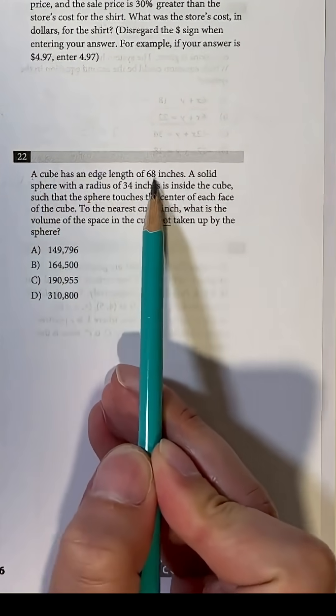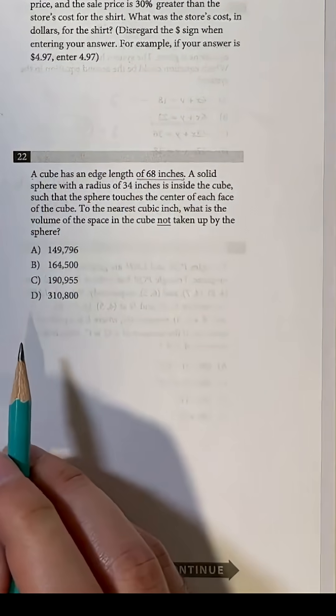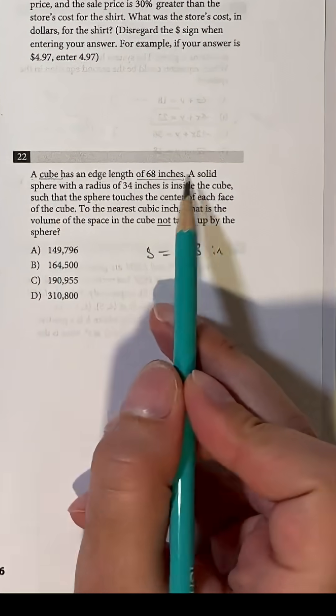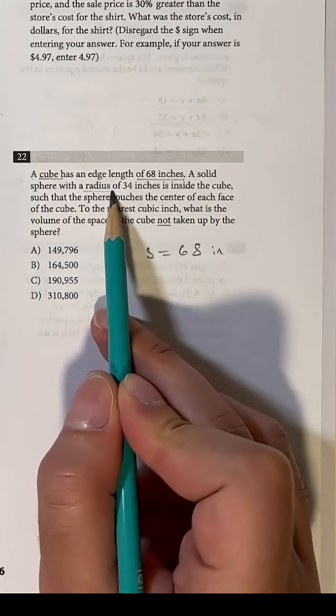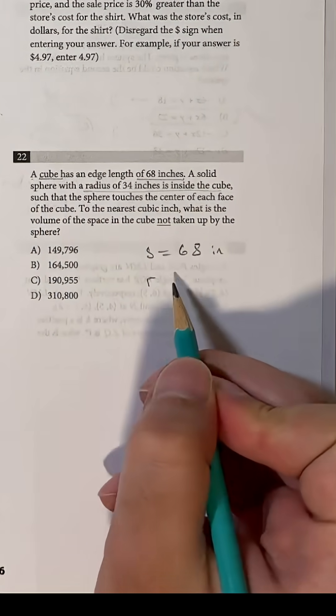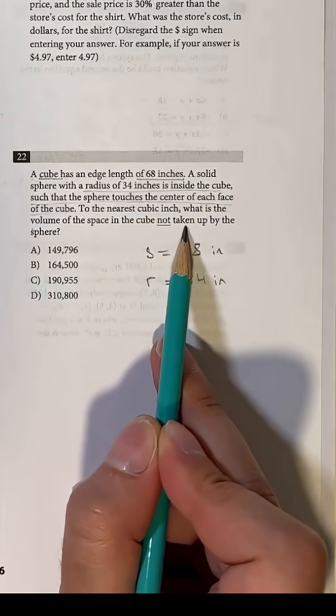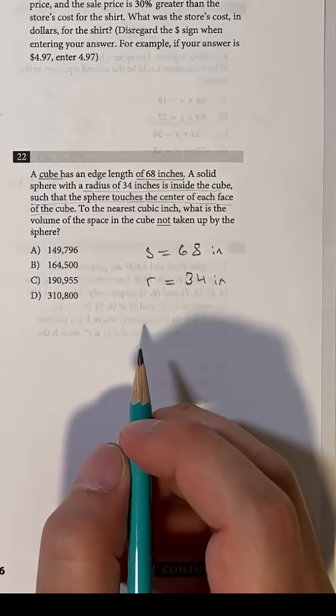This is a cool SAT problem. A cube has an edge length of 68 inches and inside this cube lies a sphere with a 34 inch radius such that the sphere touches the center of each face of the cube. You're asked to find the volume of the space in the cube not taken up by the sphere.